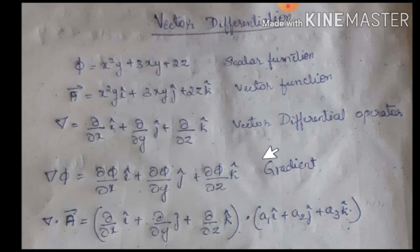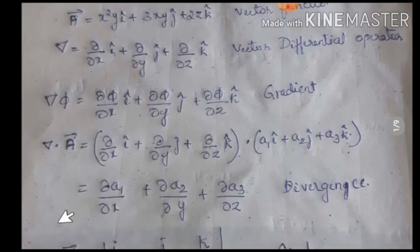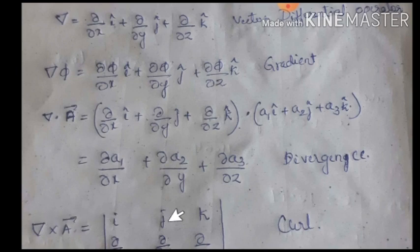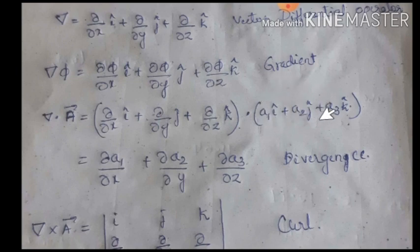When applying the vector differential operator to a vector function, there are two types of vector multiplication: dot product and cross product. The dot product of del with a vector function is defined as divergence. The cross product of del with a vector function is defined as curl. For divergence, write the differential operator dot with vector A, where A equals a1 i cap plus a2 j cap plus a3 k cap.